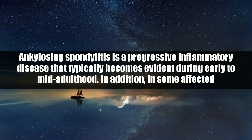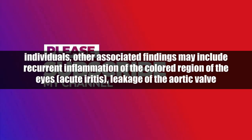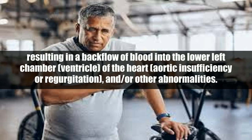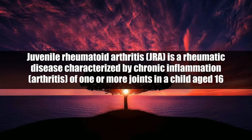Ankylosing spondylitis is a progressive inflammatory disease that typically becomes evident during early to mid-adulthood. In some affected individuals, other associated findings may include recurrent inflammation of the colored region of the eyes, acute iritis, leakage of the aortic valve resulting in a backflow of blood into the lower left chamber or ventricle of the heart, aortic insufficiency or regurgitation, and other abnormalities.